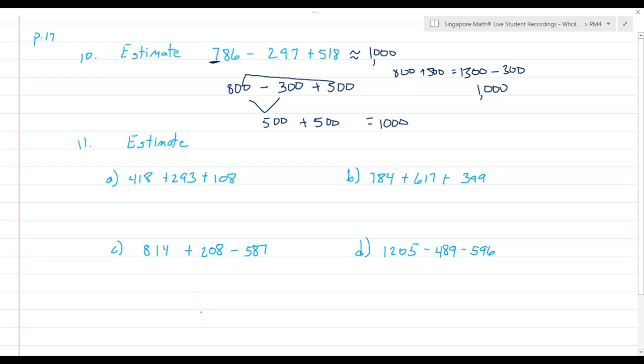So let's practice these. I would encourage you to pause the recording, work it on your own, turn it back on and check your work. 418 rounds to 400. 293 rounds to 300. 108 rounds to 100. When I add these together, 400 and 300 and 100 is about the same thing as 700.